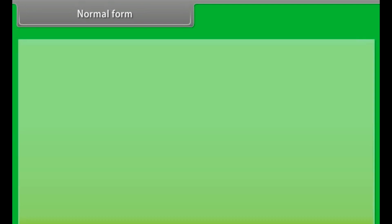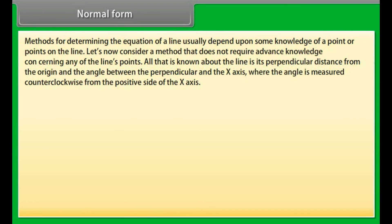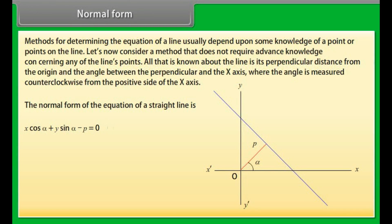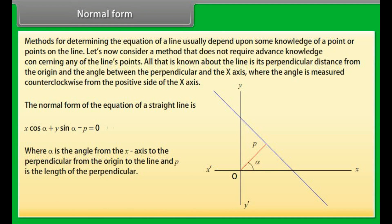Normal form: Methods for determining the equation of a line usually depend upon some knowledge of a point on the line. Normal form is a method that does not require such knowledge. All that is known is the line's perpendicular distance from the origin and the angle between the perpendicular and the x-axis, measured counterclockwise. The normal form is x cos α + y sin α − p = 0, where α is the angle from the x-axis to the perpendicular and p is the length of the perpendicular.